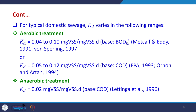Under those conditions, for typical domestic sewage the kd value varies in the range of 0.04 to 0.1 mg VSS per mg VSS per day based on BOD5, and similarly 0.05 to 0.12 depending on COD. For anaerobic treatment the value is further lower at 0.02 mg VSS per mg VSS per day based on COD.